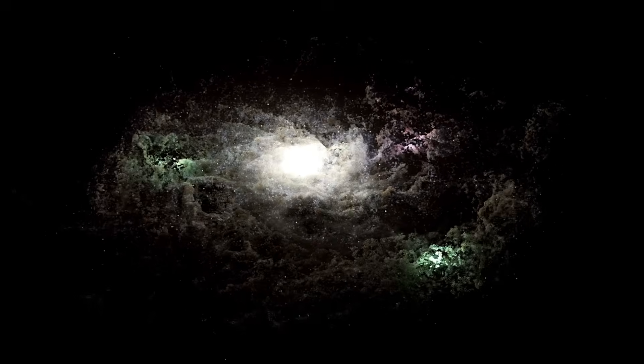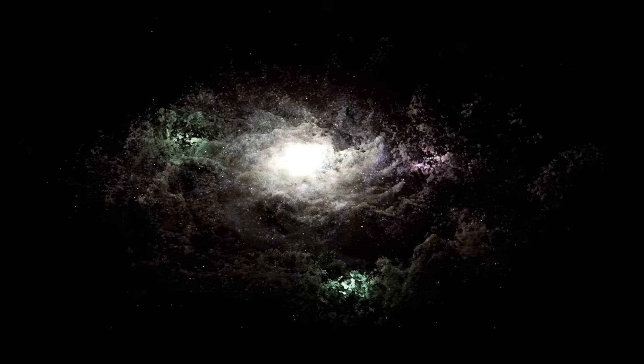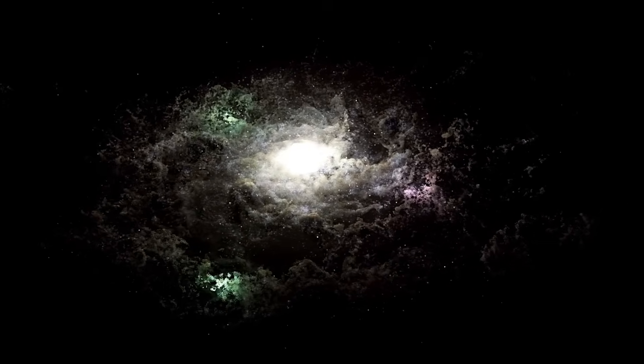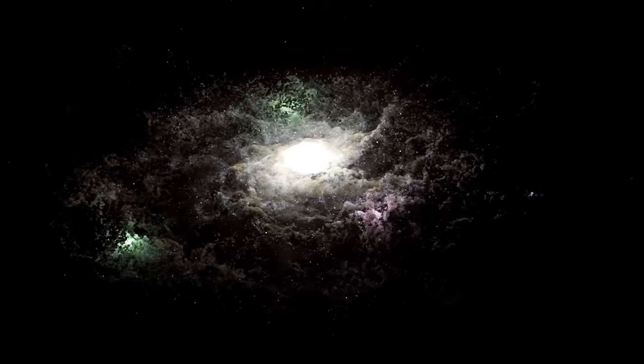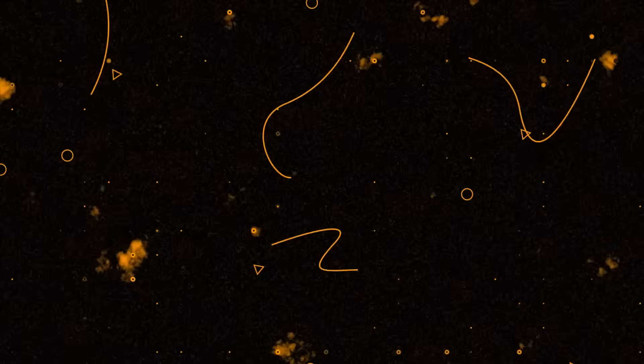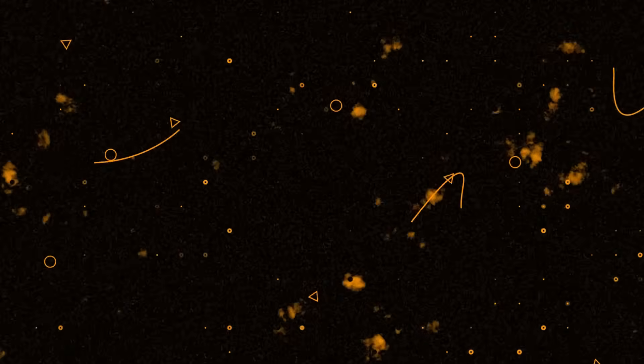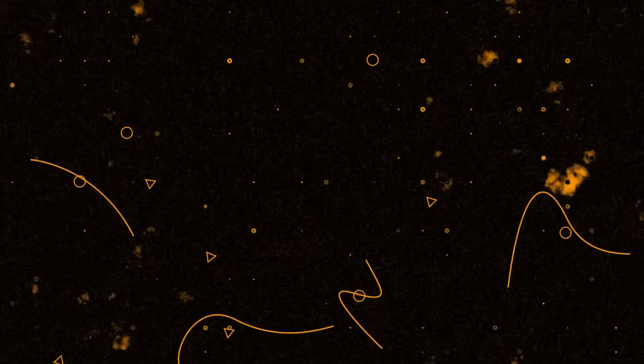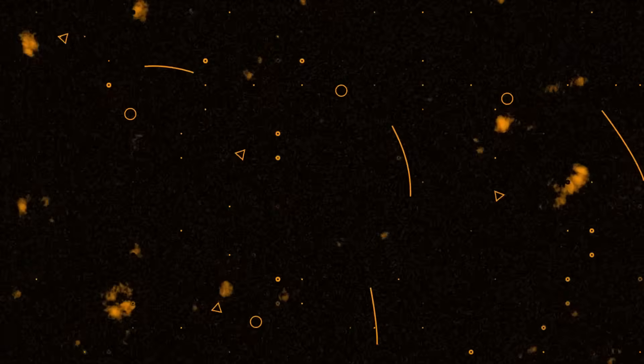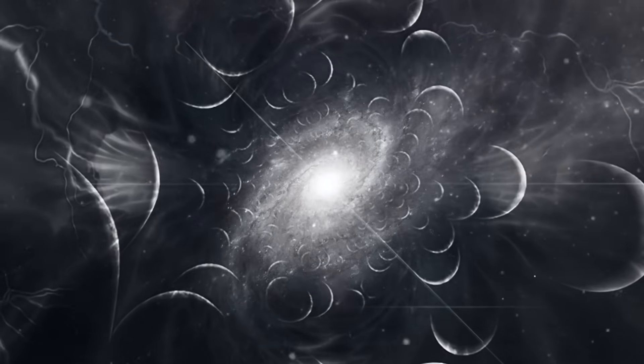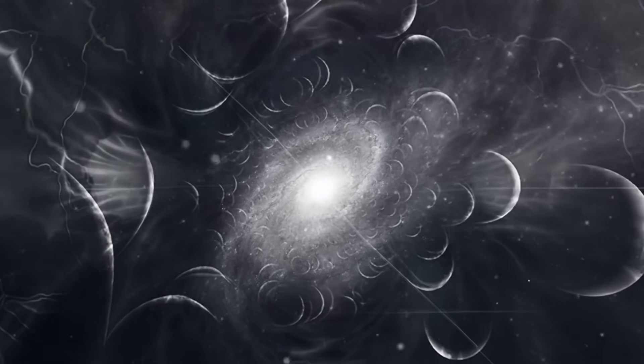Another game-changing revelation came not from what black holes emit, but from what may invisibly surround them. In a pioneering study by the Education University of Hong Kong, astronomers discovered the first indirect evidence that black holes might be cloaked in dark matter, the elusive substance thought to make up roughly 85% of the universe's total mass.